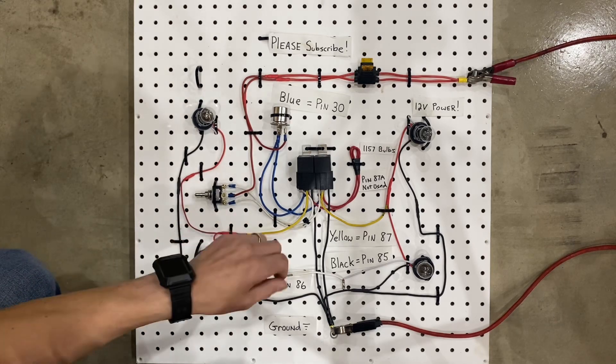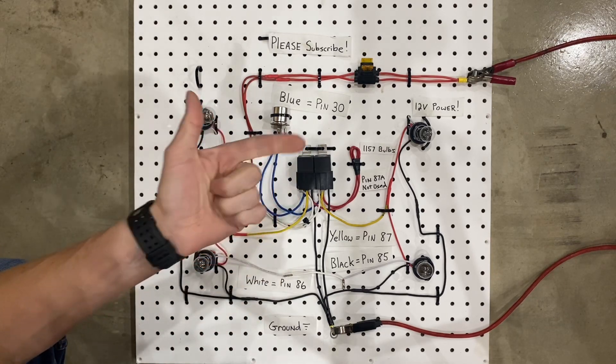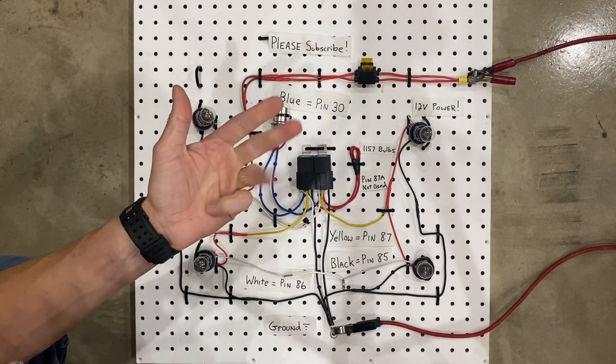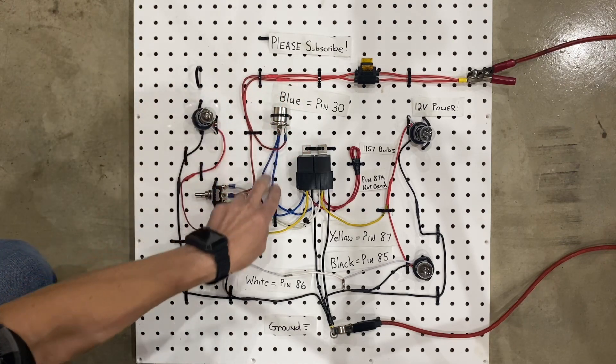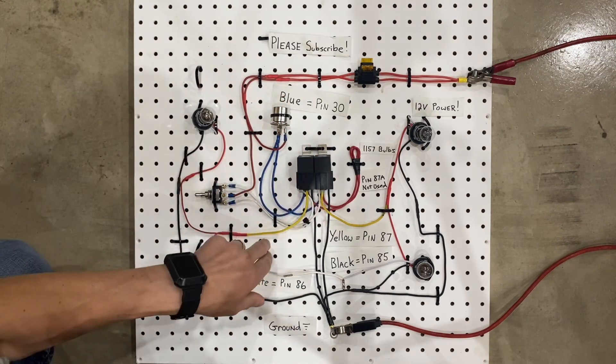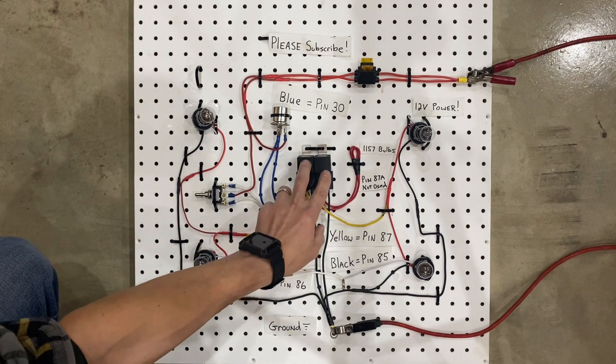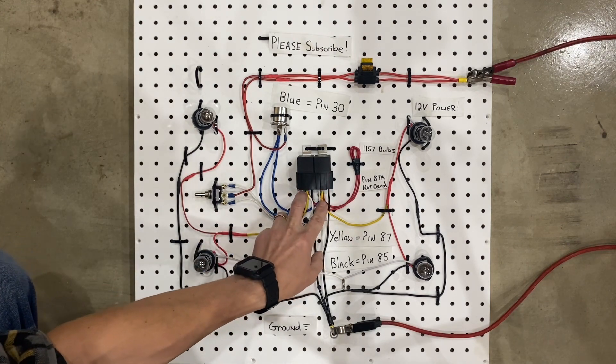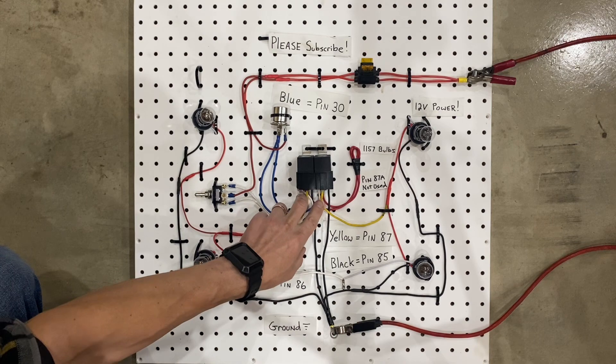The five pin relay has an 85, an 86, an 87, an 87A, and a 30. These blue wires go to pin 30 on the relays.